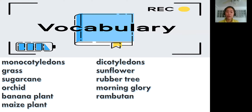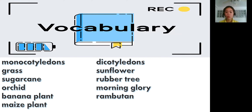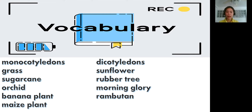Before we start, let's read our vocabulary first. Please listen: monocotyledons — grass, sugarcane, orchid, banana plant, maize plant. Dicotyledons — sunflower, rubber tree, morning glory, rambutan. I will read it again: monocotyledons — grass, sugarcane, orchid, banana plant, maize plant. Dicotyledons — sunflower, rubber tree, morning glory, rambutan.